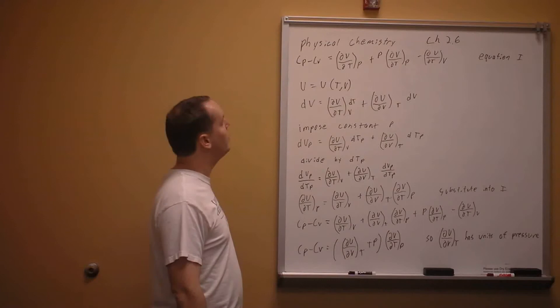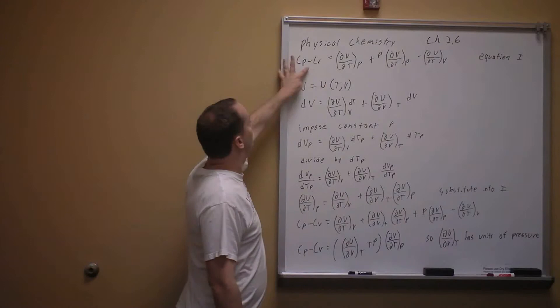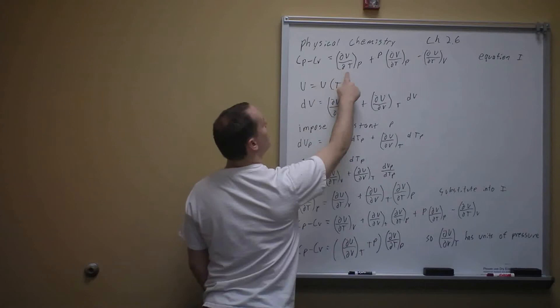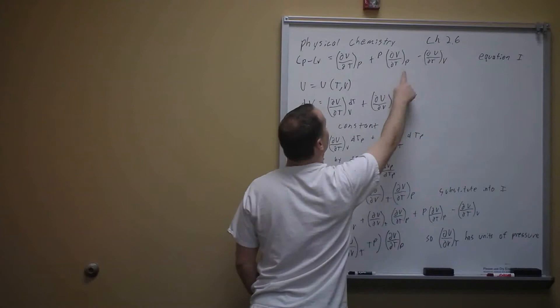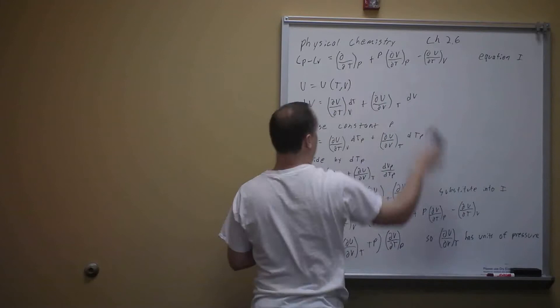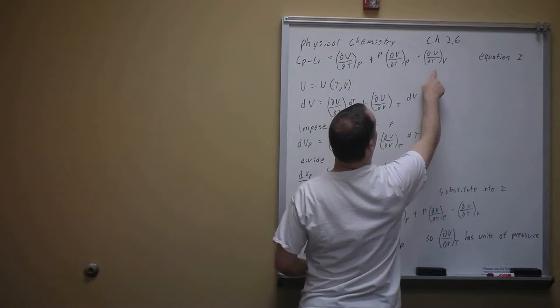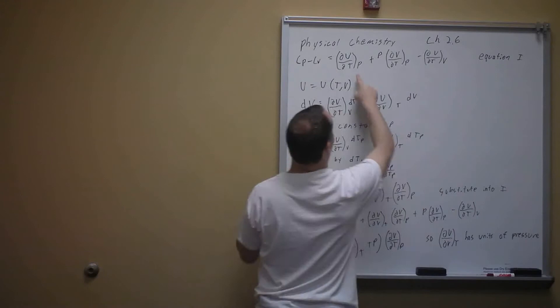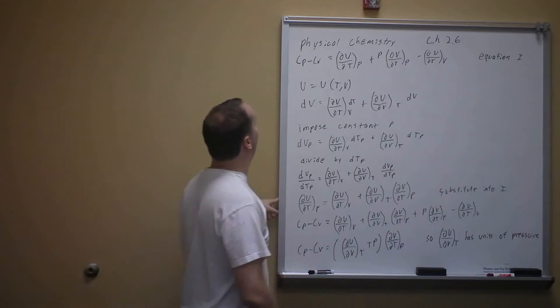Continuing in Chapter 2.6, we ended up with the equation: Cp minus Cv equals the derivative of U with respect to temperature at constant pressure, plus P times the derivative of volume with respect to temperature at constant pressure, minus the derivative of U with respect to temperature at constant volume. Note these don't cancel because one is constant pressure and the other is constant volume. We'll call this equation one.